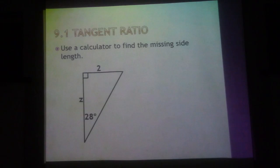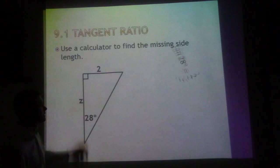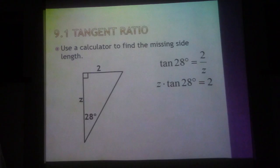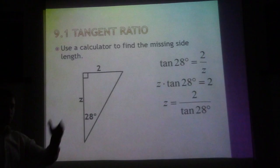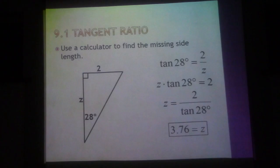This one's a little different. Tangent of 28° equals 2 over Z. We need to get rid of Z, so multiply each side by Z. Now we have to get rid of tangent 28°, so we divide by tangent 28°. Go into your calculator: 2 divided by tangent 28°, and we get 3.76.